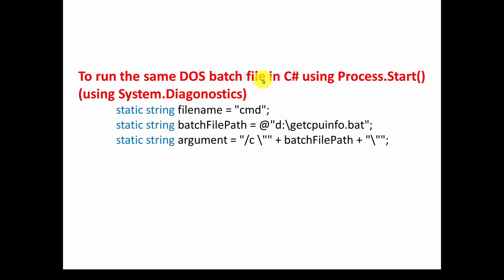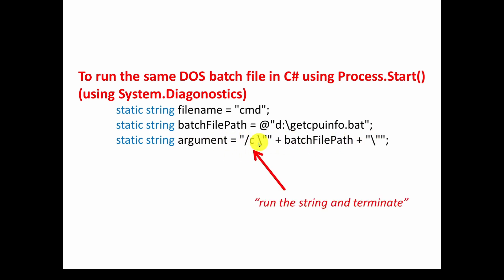Now to run the same DOS batch file in C Sharp using Process.Start — System.Diagnostics — we use the file name, which is the program to run. We're going to say 'cmd' and then have an argument where we specify the batch file path using an ampersand. For example, D:\getcpuinfo.bat. The argument uses /C — which says run what's in this string and terminate — followed by escaped double quotes around the batch file path. So you get a slash C and then the batch file path in double quotes.